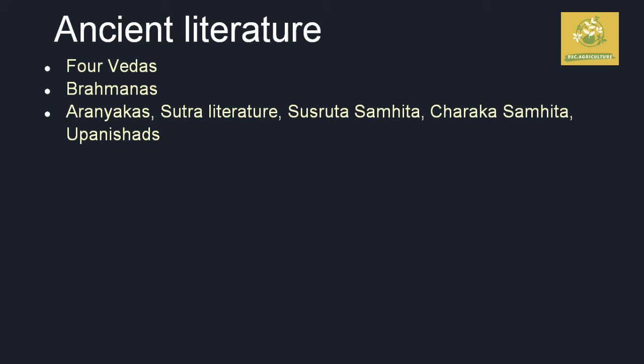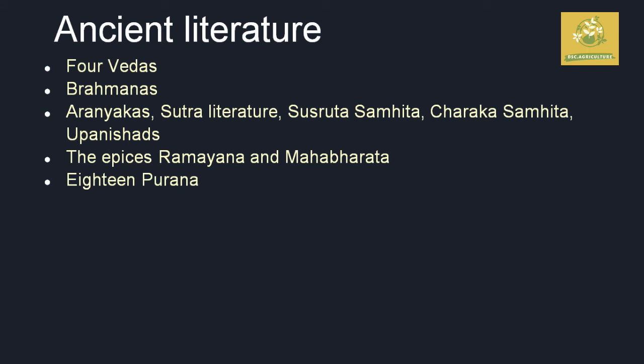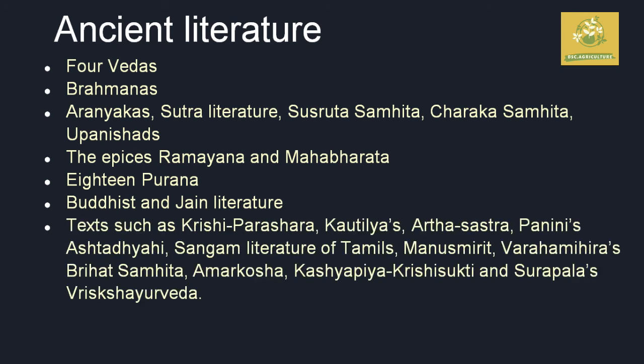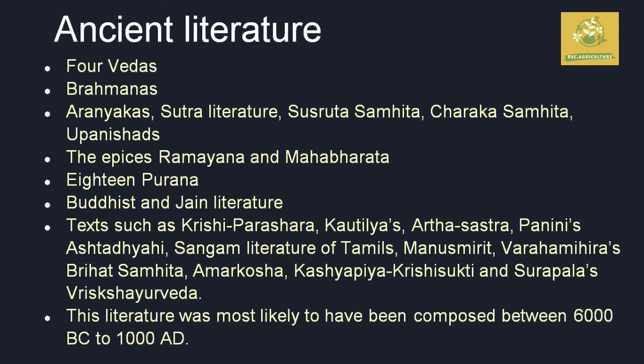In ancient literature, works that explain about agriculture include the four Vedas, Brahmanas, Aranya Sutra literature, Chakra Sharma Spati, and the epics Ramayana and Mahabharata. Also important are the 18 Puranas, Buddhist and Jain literatures, as well as the texts of Krishna, Parashara, and Panini — including Astadanya, Brihat Samhita, Amarkosha, Surpala, and Vriksha Ayurveda. These ancient literatures were mostly composed between 6000 BC and 2000 AD.